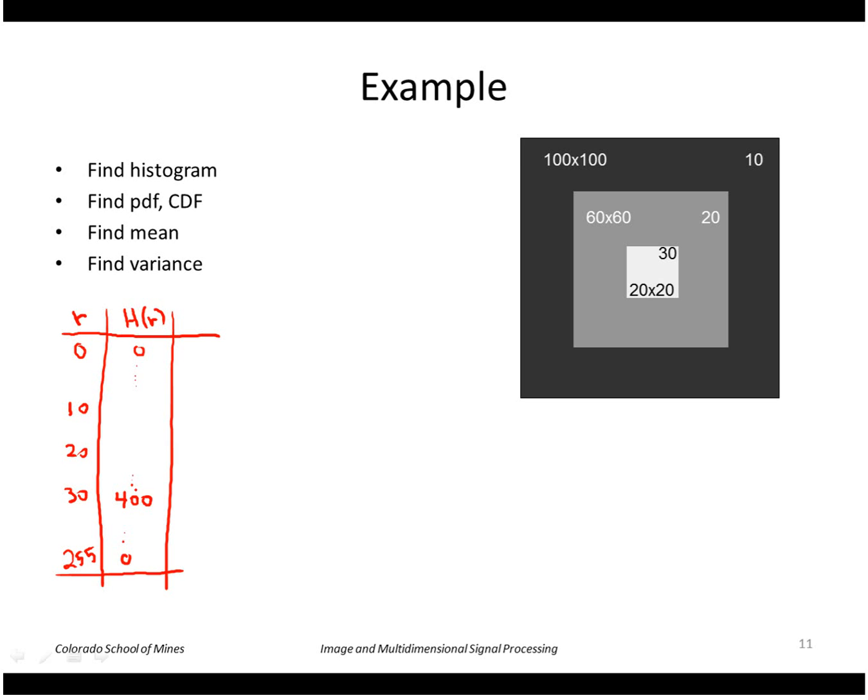The next gray region, which is 60 by 60, is 3,600 pixels, except I have to subtract off the 400 that are inside there. So I actually only have 3,200 values that are a 20. The 100 by 100 is 10,000, and I subtract off the 3,600, so I get 6,400. The sum of that equals 10,000, which it should because it's a 100 by 100 image.